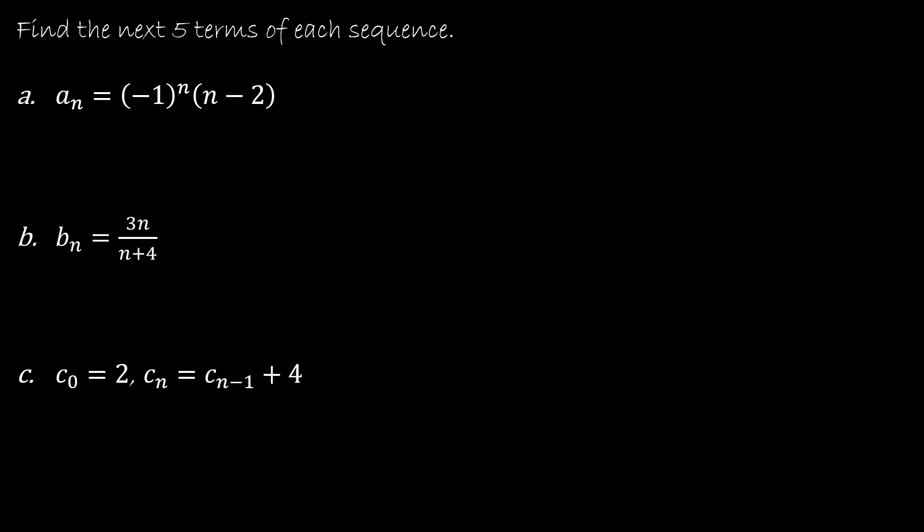The first one is negative 1 to the n, times n minus 2. I've included this because you're going to see this a lot — where you have a negative 1 to the n — because that's going to alter our sign, making it go back and forth between positive and negative.